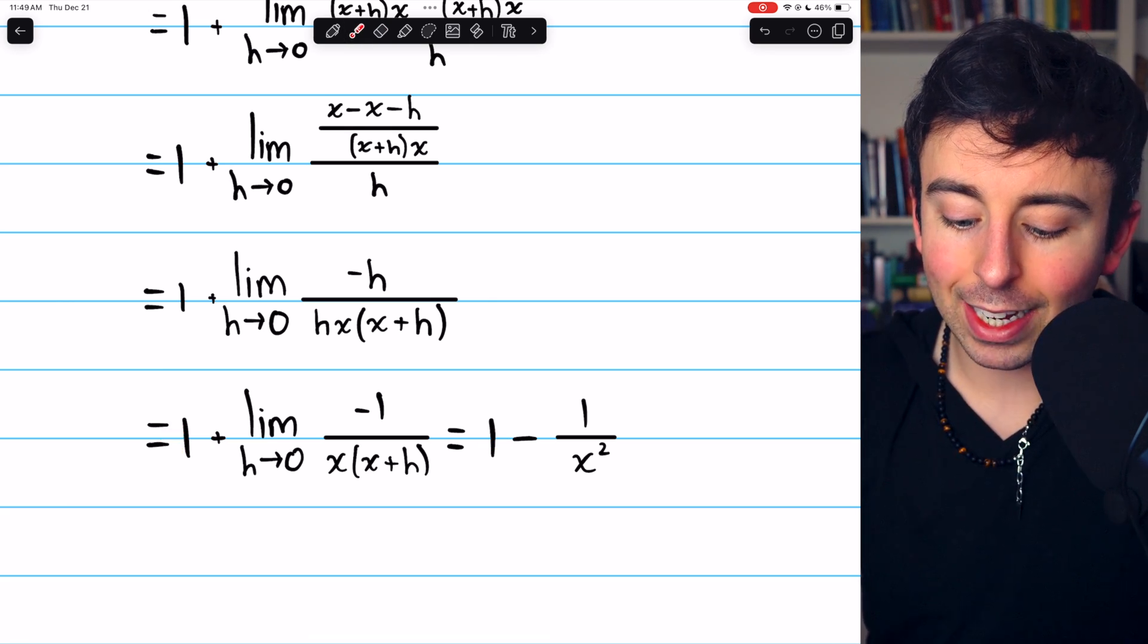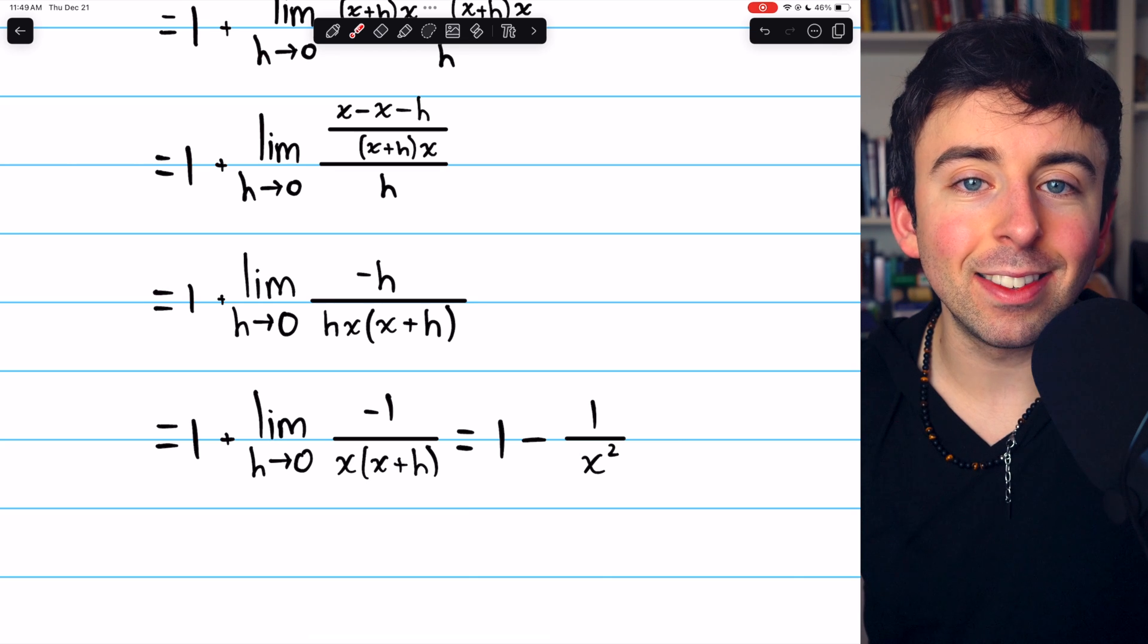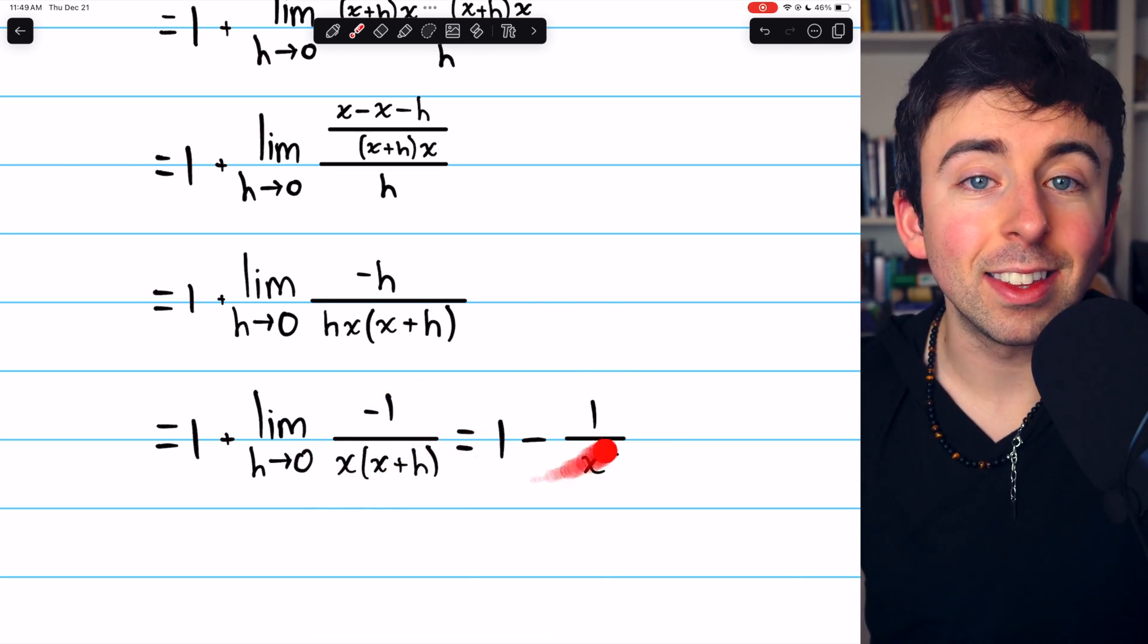It is 1 minus 1 over x squared. After we plug in 0 for h, this just becomes negative 1 over x squared. So this is the derivative.